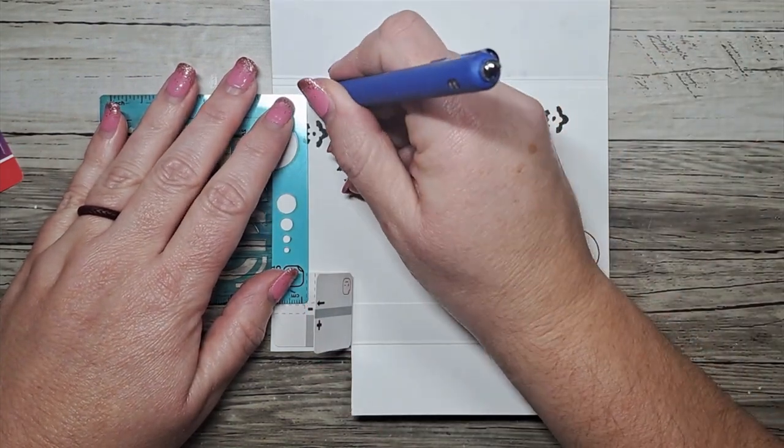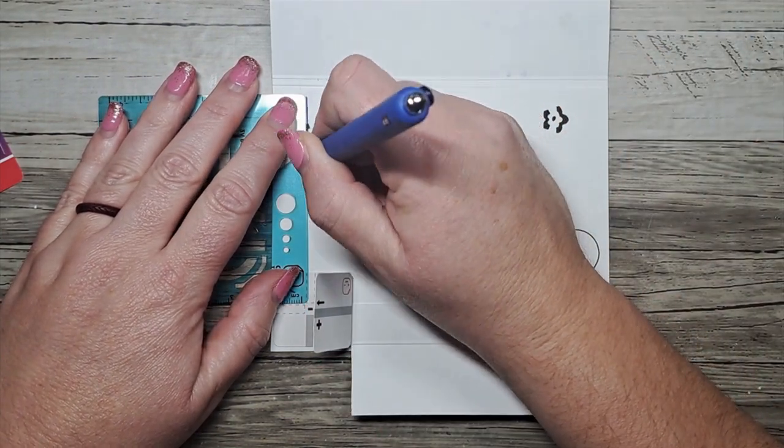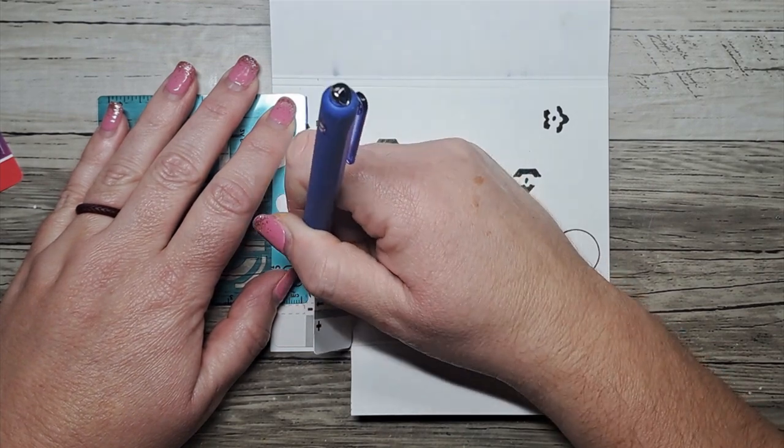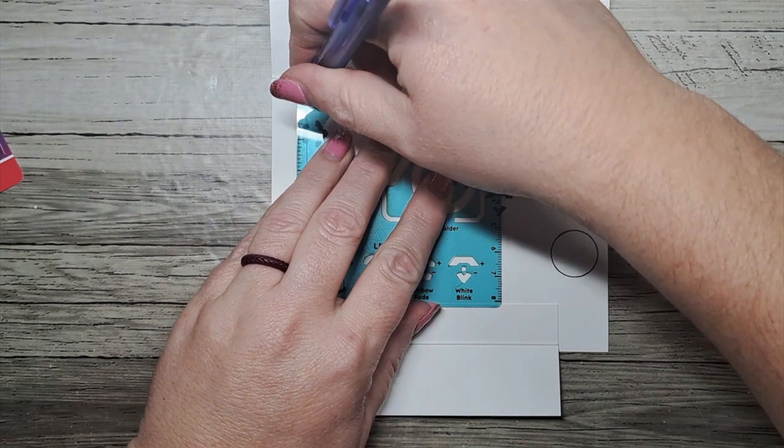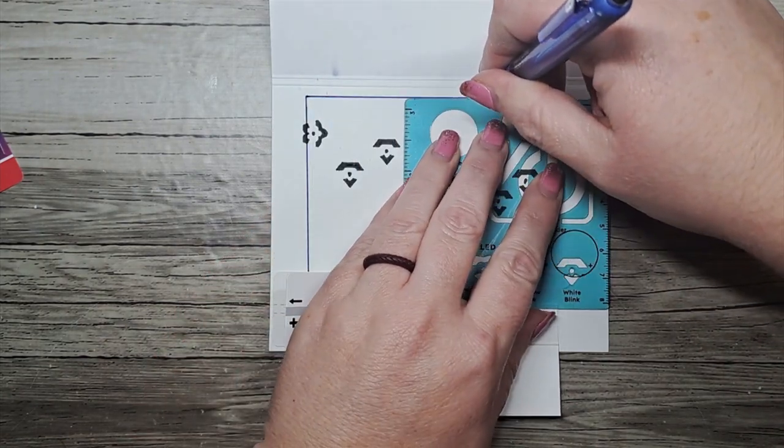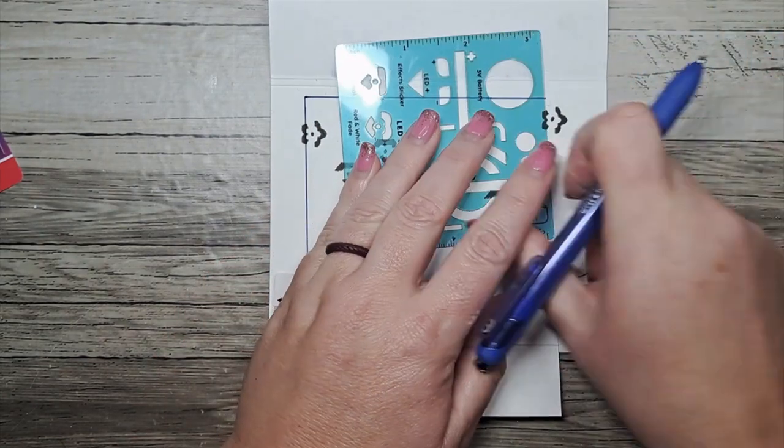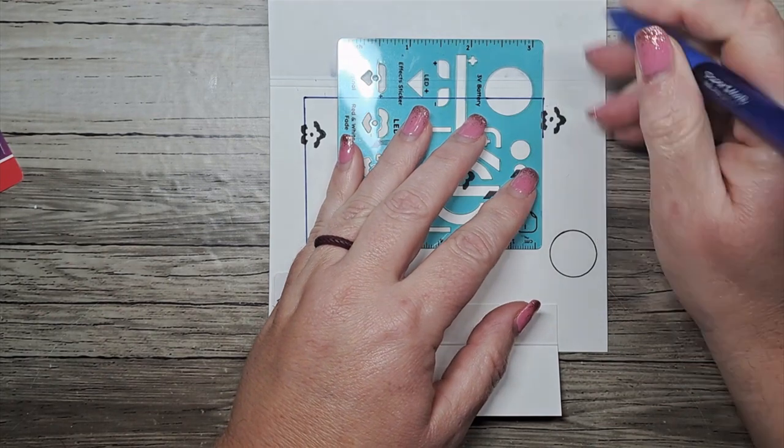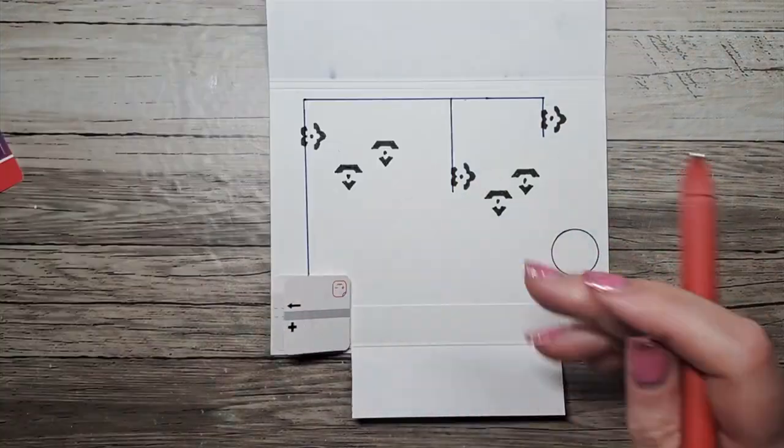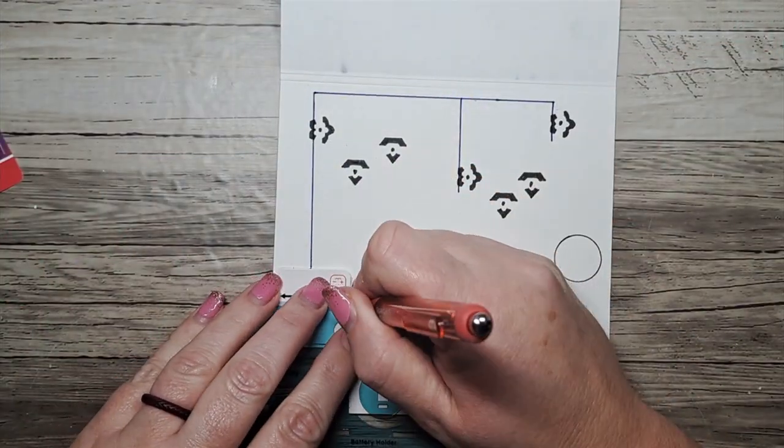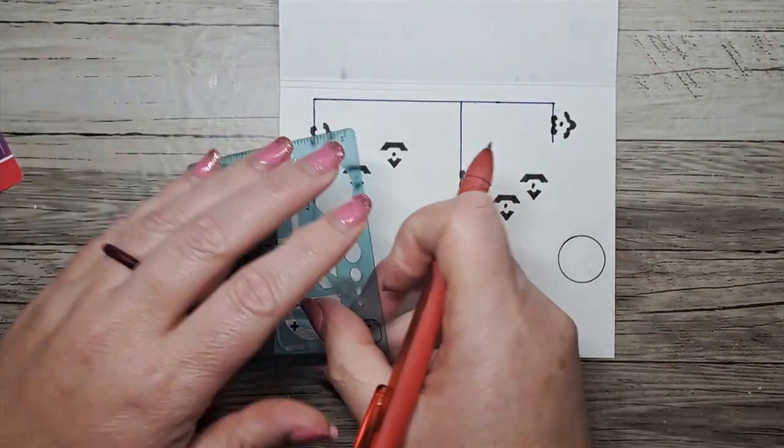To stick these on, you just peel off the backer and you're going to plop it down on your card making surface. We're going to start mapping out the negative side of our circuit. We're going to go from the inside of the battery holder out to our three rainbow fade stickers. We're just going to hit up the negative sides of those stickers.